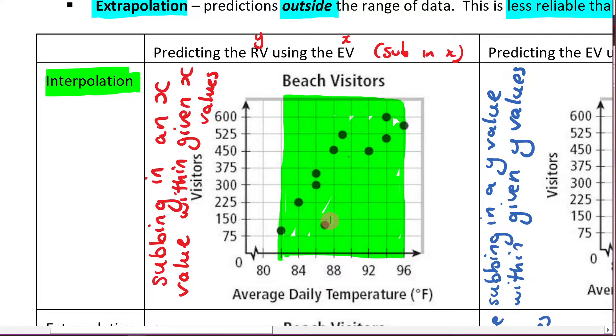So the context of this graph is beach visitors. The average daily temperature is the x and the visitors is the y. So if we're predicting the response variable, we're predicting the amount of visitors are coming, and we're going to sub in an explanatory variable to do that. So the question might be something along the lines of, what is the amount of visitors you predict you will have when the average daily temperature is 90 degrees?